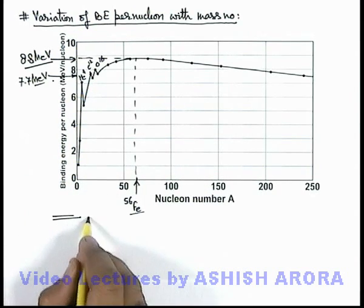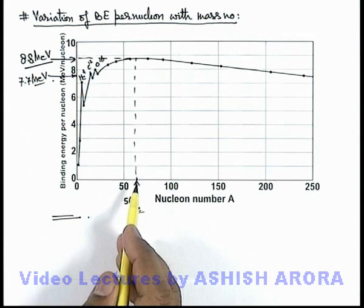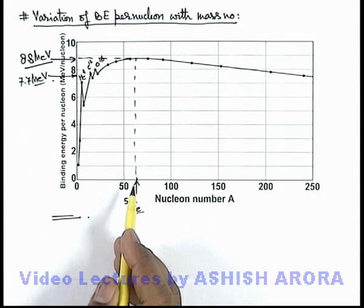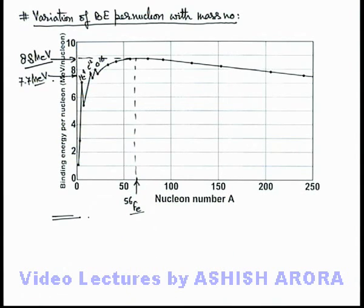So these are some facts you must be aware about the binding energy per nucleon of an element which gives us the idea about stability of various nuclei which are found in nature. The applications of this variation we are going to take up in the next topic of nuclear reactions, where this curve is going to play an important role in analysis of various nuclear reactions and the energy produced in the reactions.